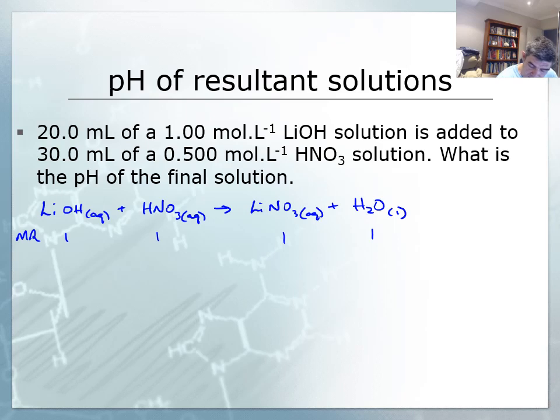I need to work out the number of moles of each. For the lithium hydroxide, it's a 1 molar solution and we have 20 mL, so 0.02 litres. For the nitric acid, it's 0.5 molar and we have 30 mL, so 0.03 litres.